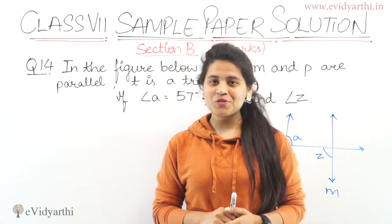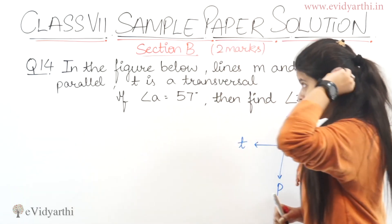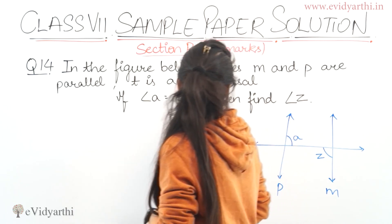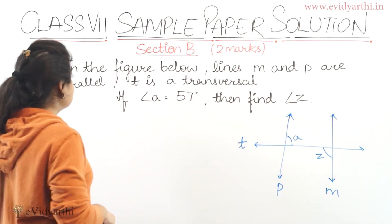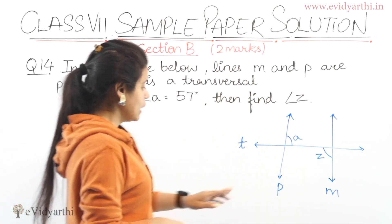Coming to the next question, which is question number 14. In the figure below, lines M and P are parallel, and T is a transversal.